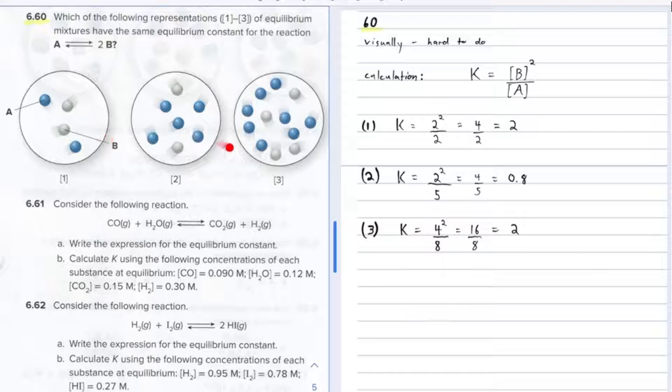So each of these are said to be equilibrium mixtures, and we're supposed to figure out which one of these have the same equilibrium constant. Now remember, the equilibrium constant expression looks something like this.